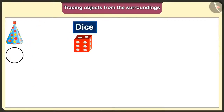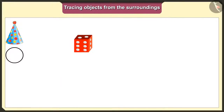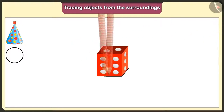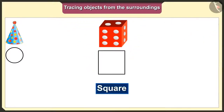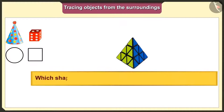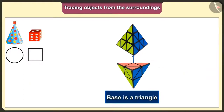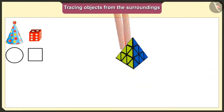Now we will trace the dice. This dice's base is a square, so we will get a square shape when we put it on paper and trace it. Now let's see which shape we would get when we trace this pyramid-shaped toy. The base of this toy is a triangle, so we will get a triangle shape when we trace it.